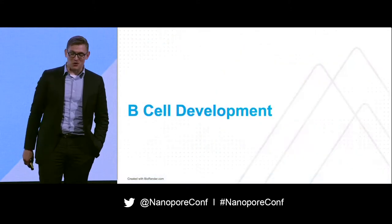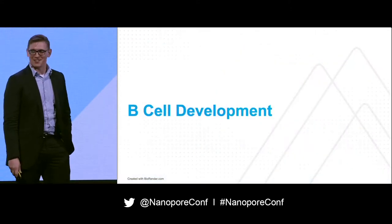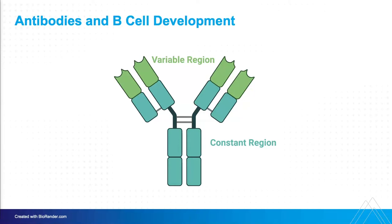I'm going to give a quick crash course in B-cell development for those who are not immunologists. From the very highest level, antibodies are built to stick to things. Here in green we have the variable region — that is the part of the antibody that's sticking to things. And then you have this constant region, which in reality is not always so constant.